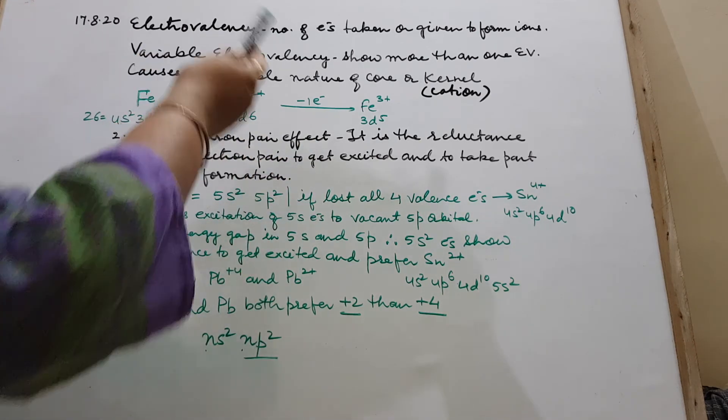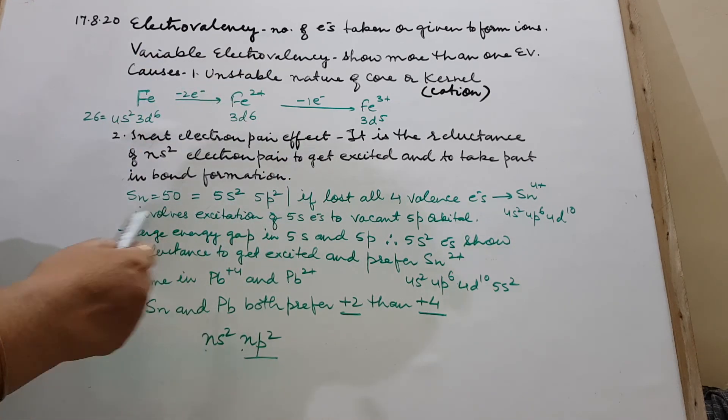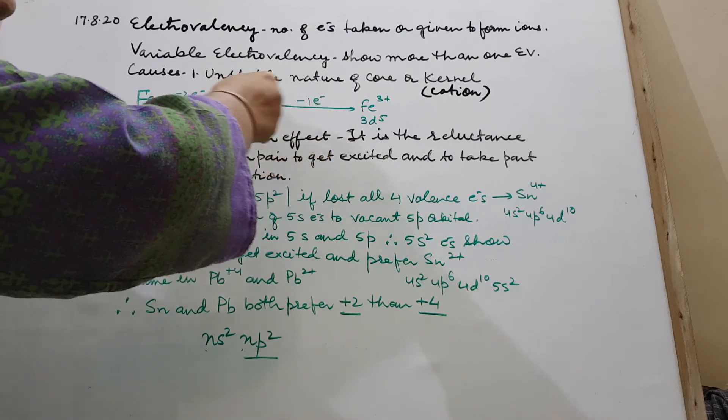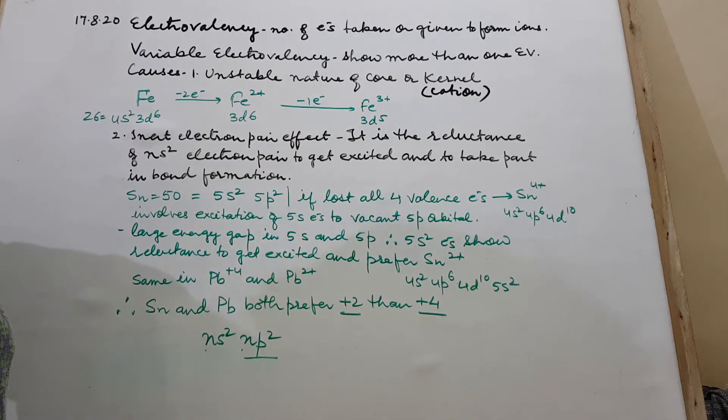Similarly, they ask you, why out of ferrous and ferric, ferric is more stable? It is this. Or why iron first forms Fe3+ then Fe2+, and which out of these is more stable? Here it is due to unstable nature of core or kernel, which is due to electronic configuration as it is clear.